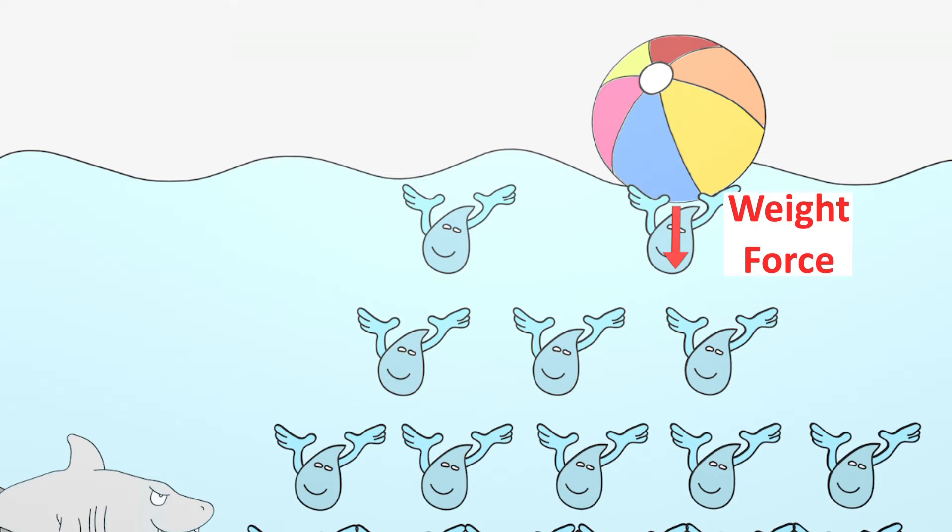As a result, the beach ball presses on the water surface with a very low weight force. The weight force is so low that the few water particles on the surface press against it strong enough for the beach ball to experience a buoyant force that is just as great as the weight force, so the ball can float.